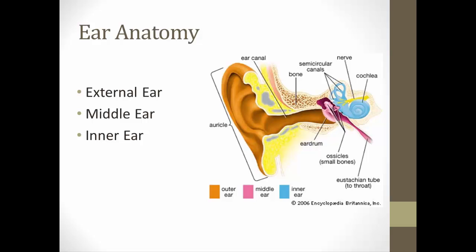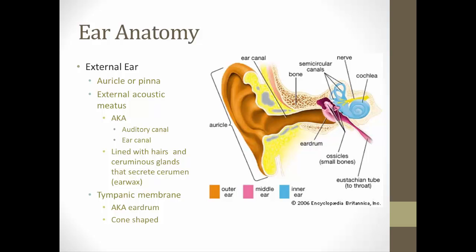Looking at the ear anatomy, the ear is divided into three portions: the external, middle, and inner ear. The external ear consists of the auricle, or pinna — that's the outer portion of the ear — designed to help draw in sound waves to travel up the next portion of the ear called the external acoustic meatus, also known as the auditory canal or ear canal.